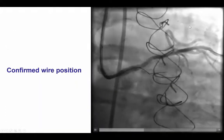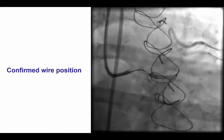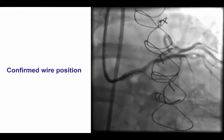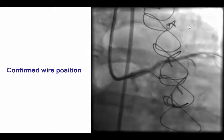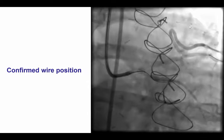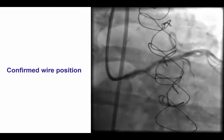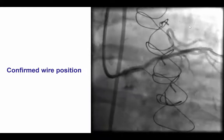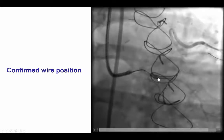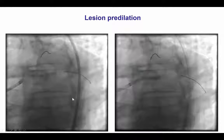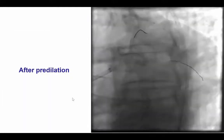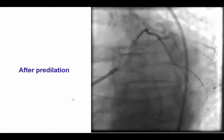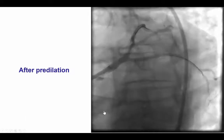Before we do anything, the first step is to confirm that the wire is where we think it is — either in the distal true lumen or within the vessel architecture. We do an injection, and in this particular case there were no contralateral collaterals, so the whole case was done through a single 8-French 3.75 EBU guide catheter. The wire does seem to be within the true lumen, confirmed on contralateral view. The wire was changed for a soft workhorse guide wire, followed by predilatation of the lesion, which restored TIMI flow into the obtuse marginal as well as the distal circumflex.